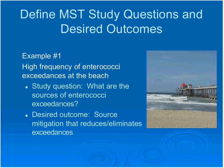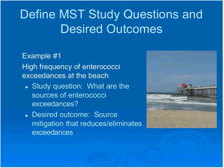One of the most important things to do up front is to define your study question and decide on desired outcomes. For example, if you have a high frequency of enterococci exceedances at a beach, your study question will be: what are the causes or sources of those exceedances? You're looking specifically at enterococci versus total and fecal coliforms, and your desired outcome is source mitigation that reduces or eliminates the exceedances.